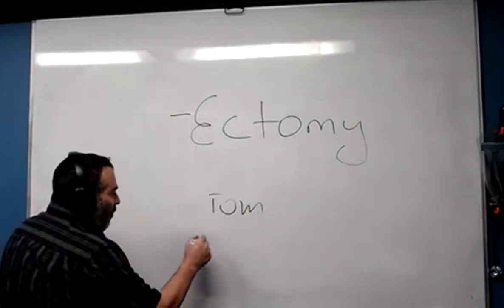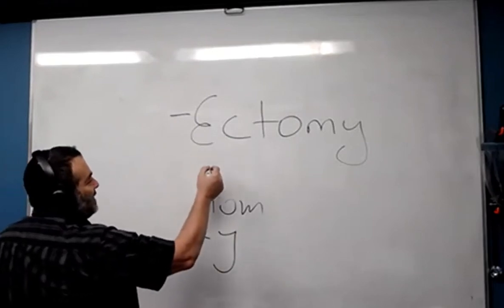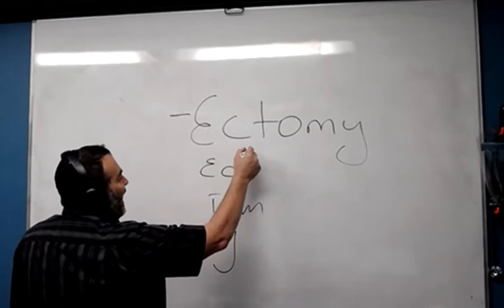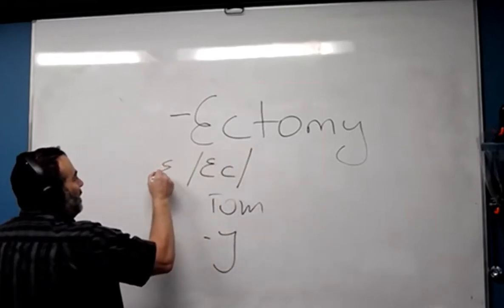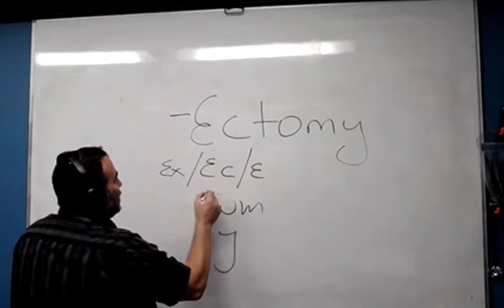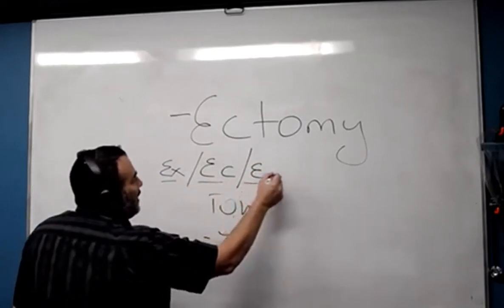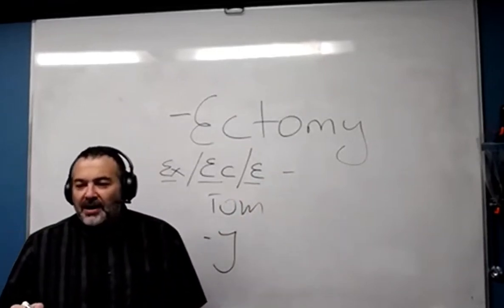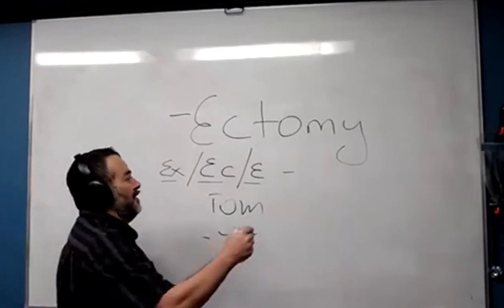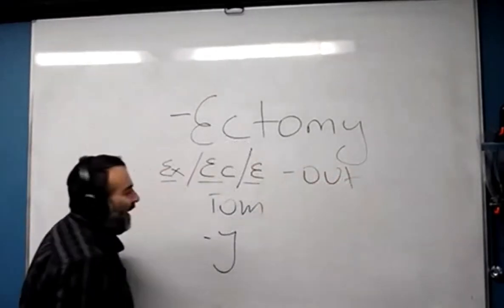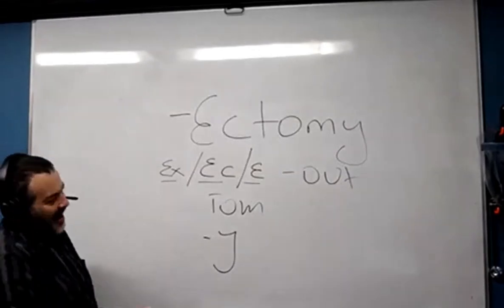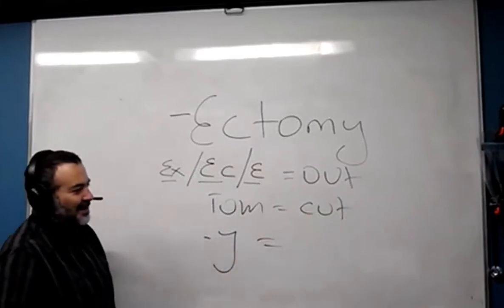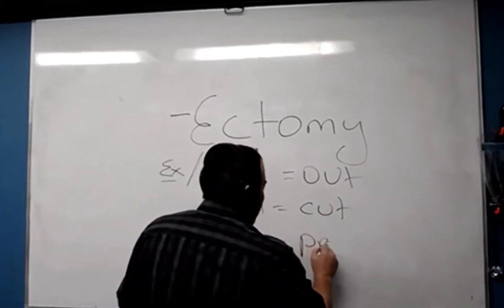Tom's fine, we have a Y, very good. And now what's left is ECK. Now I'm going to cheat a little bit and tell you that ECK is the same thing as EX and E, so X, ECK, and E, they all mean the same thing. What does X mean? I just told you that not more than two minutes ago. Out. Out. Out. What is tom? Cut. Thank you. Tom means to cut. And what was Y, my friends? Procedure.